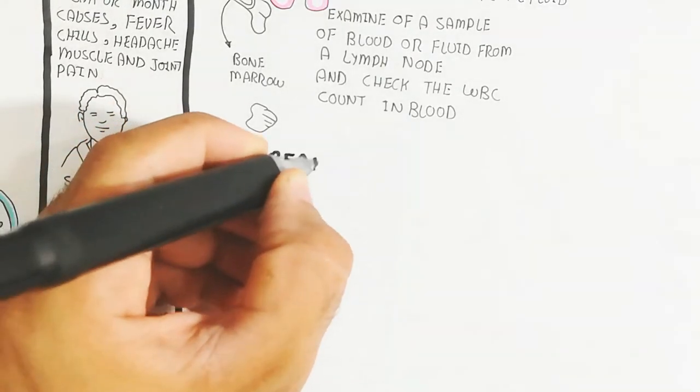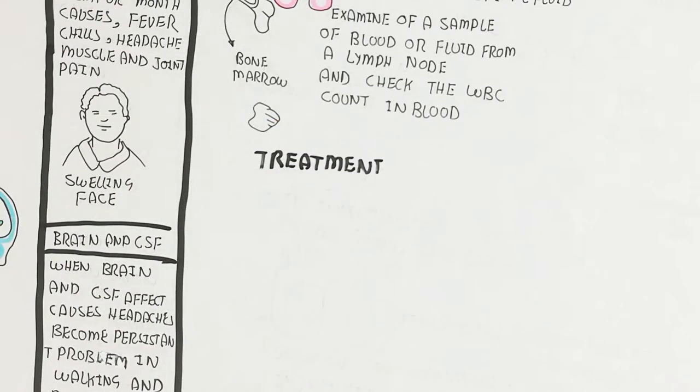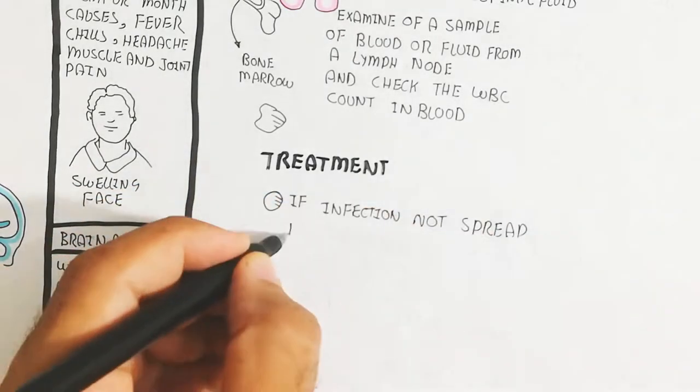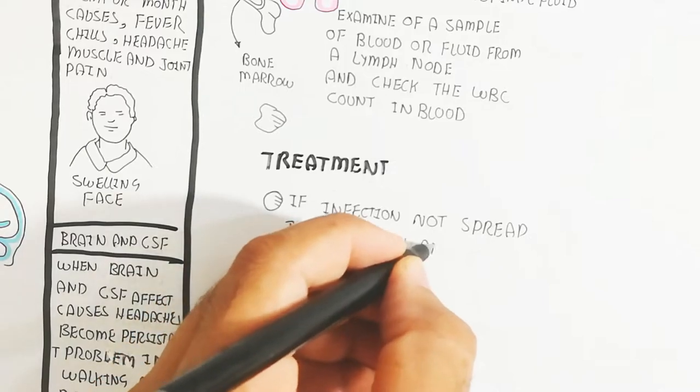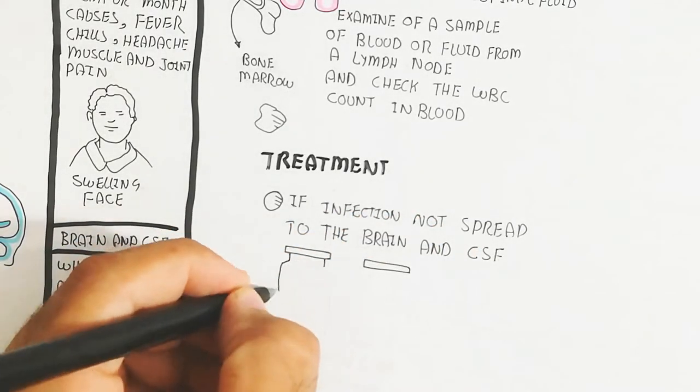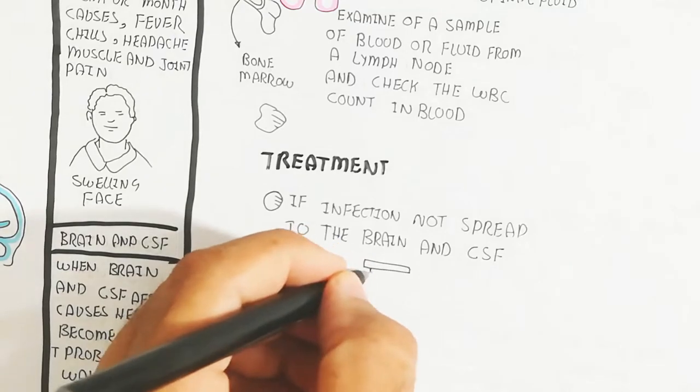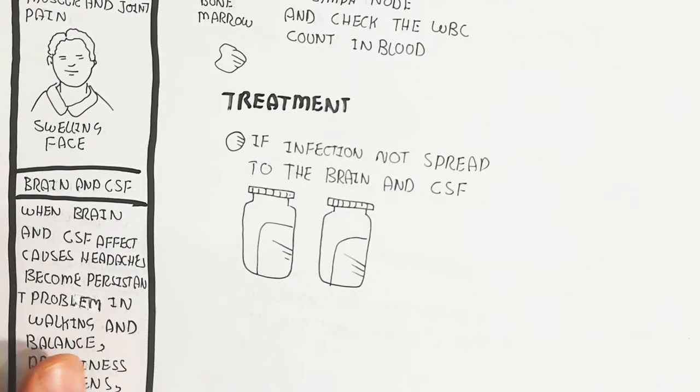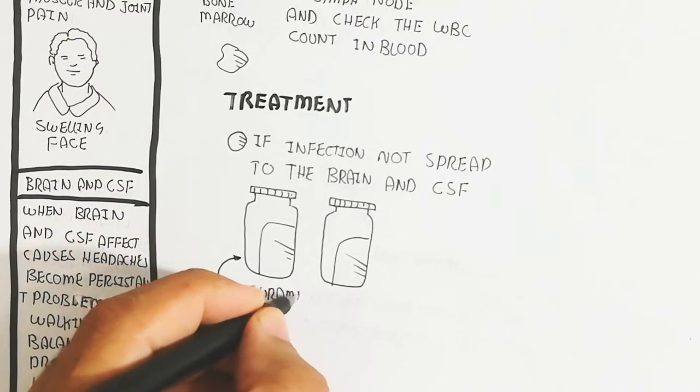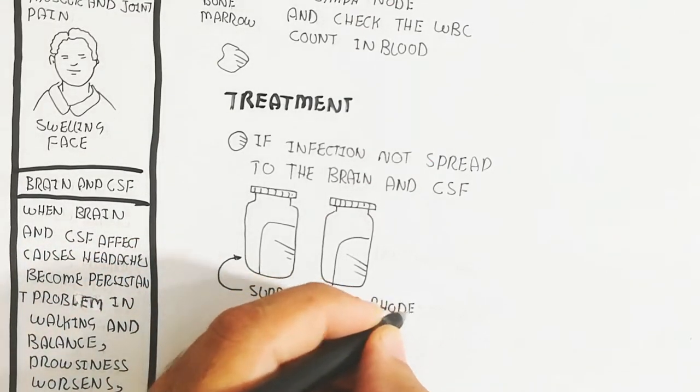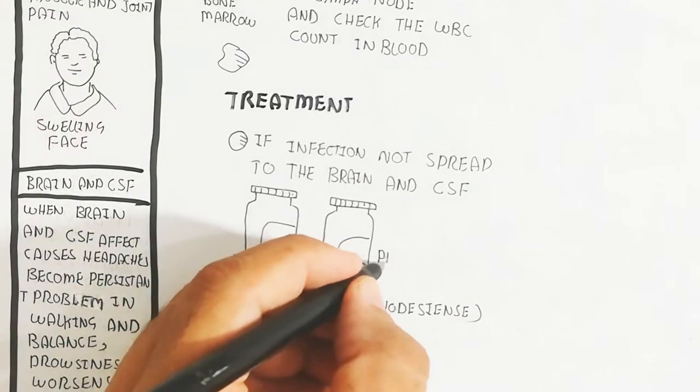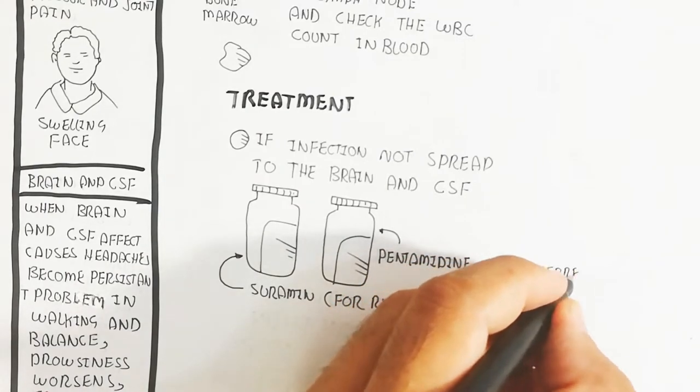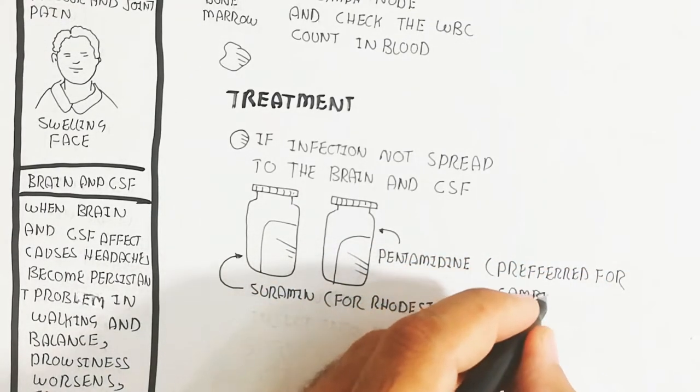Let's understand treatment. If infection has not spread to the brain and cerebrospinal fluid, we can use this medication: suramine for rhodesiense and pentamidine, which is preferred for gambiense. These are two types of species related to the same genus.